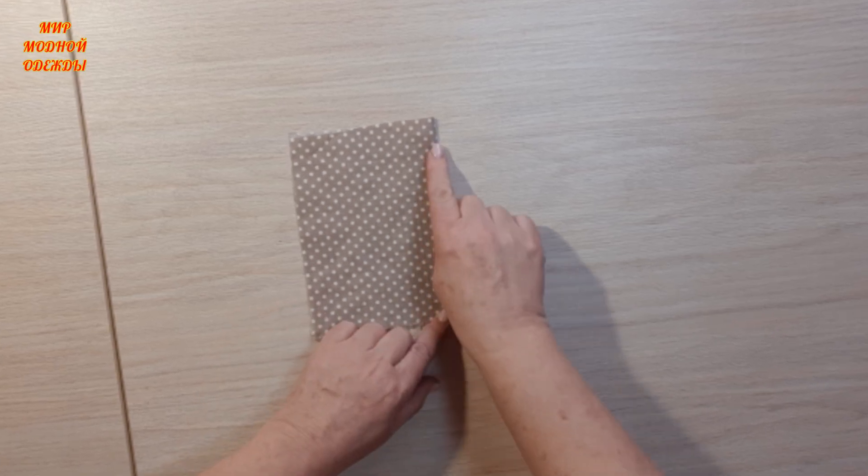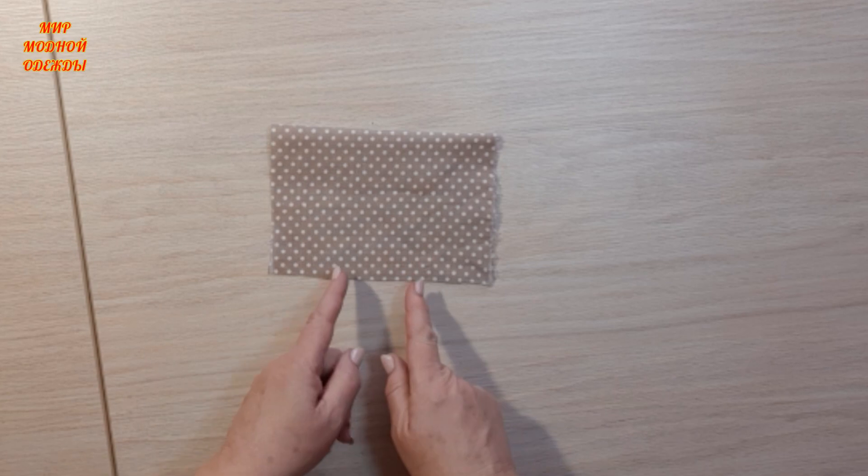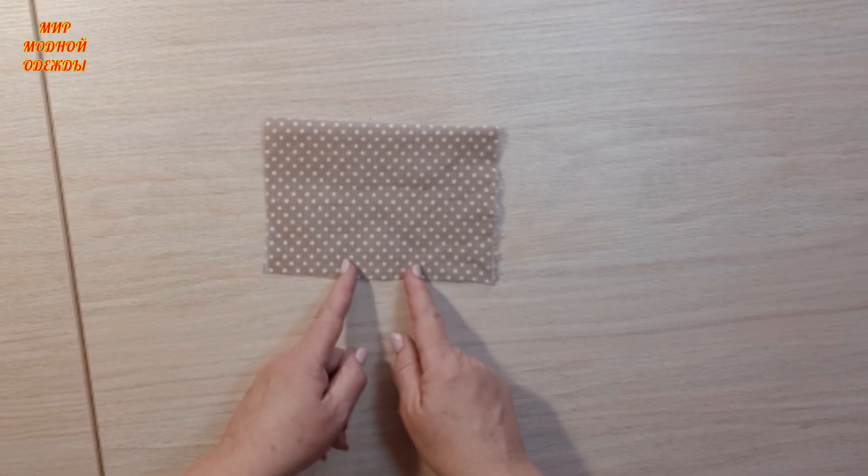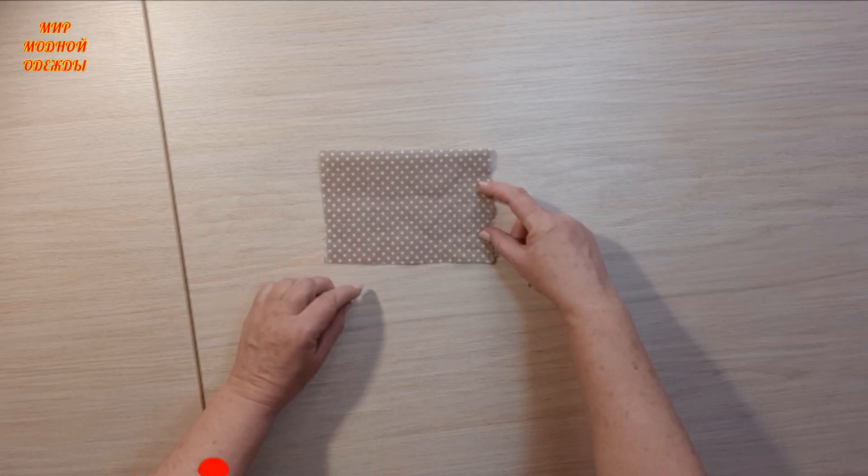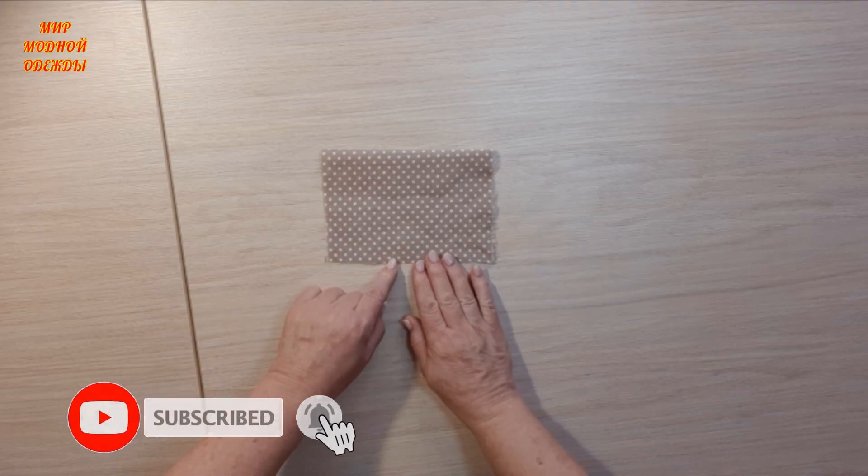Here will be the fold, and here we need to sew the entrance for the duvet. To insert the blanket, I want to leave the opening on the side, not at the bottom, not on the short side, but on the long side. I like it better this way.